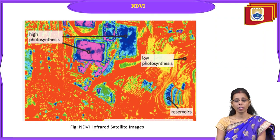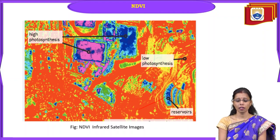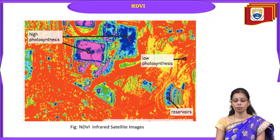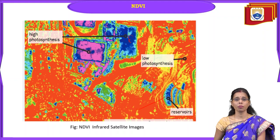Here we have NDVI infrared satellite images showing high and low photosynthesis areas. The purple and dark blue color indicates high photosynthesis areas, while the red color indicates low photosynthesis areas. Through infrared satellite images, we can find out about the health of the vegetation and where photosynthesis is happening more or less, so that further steps can be taken for the improvement of the vegetation.